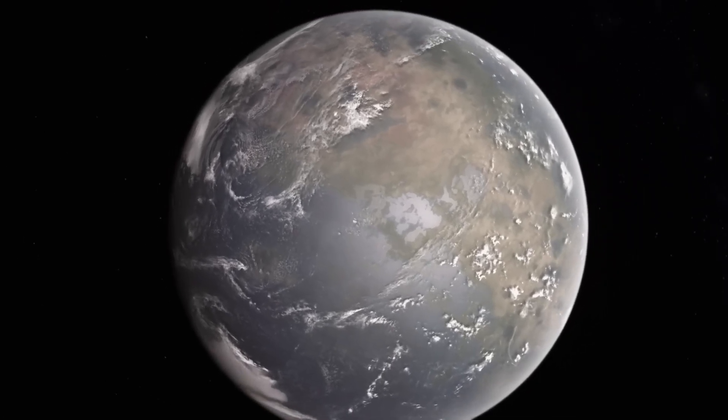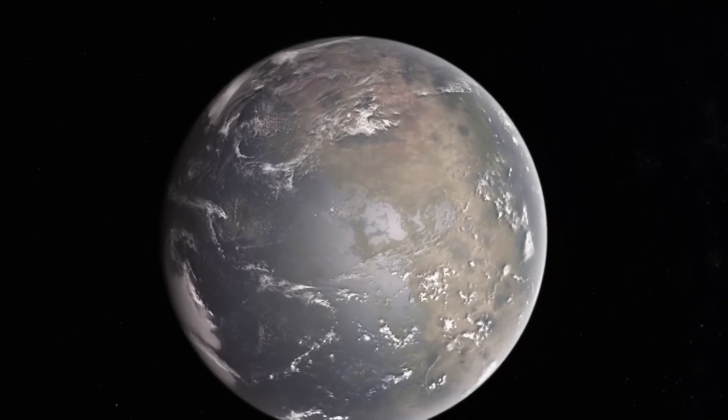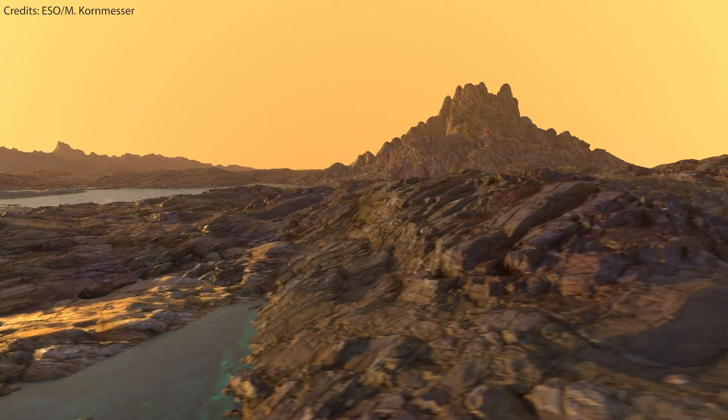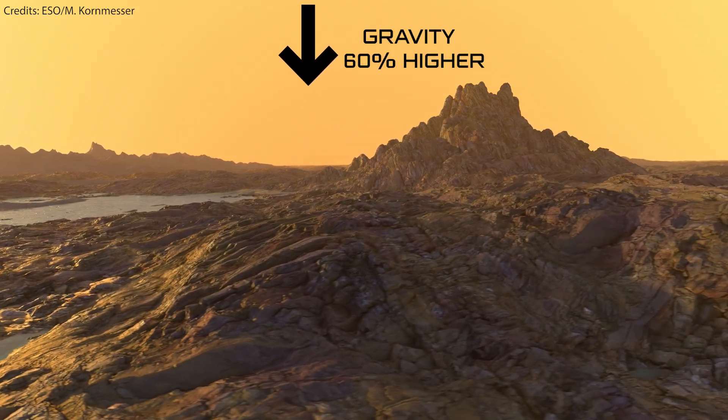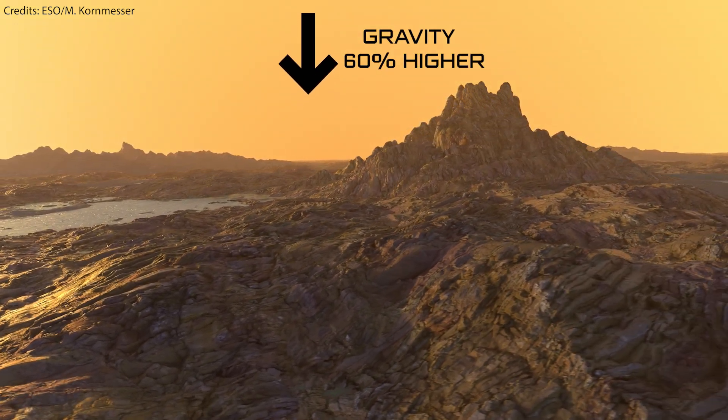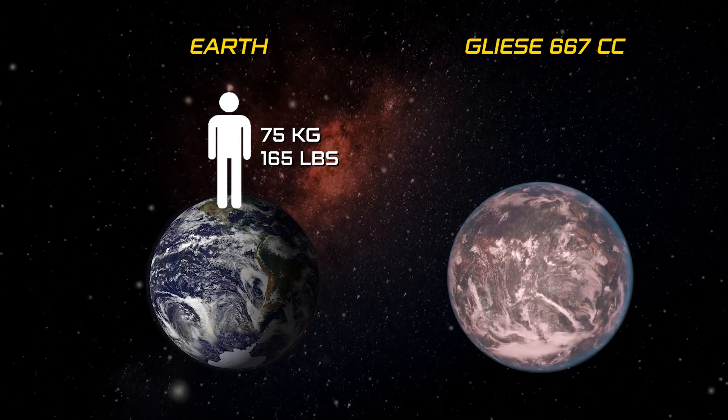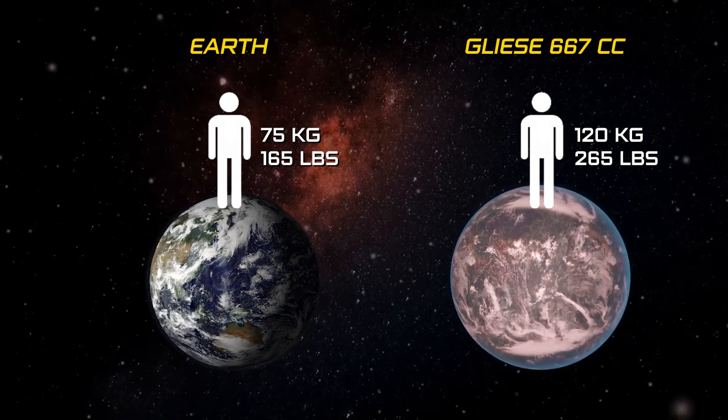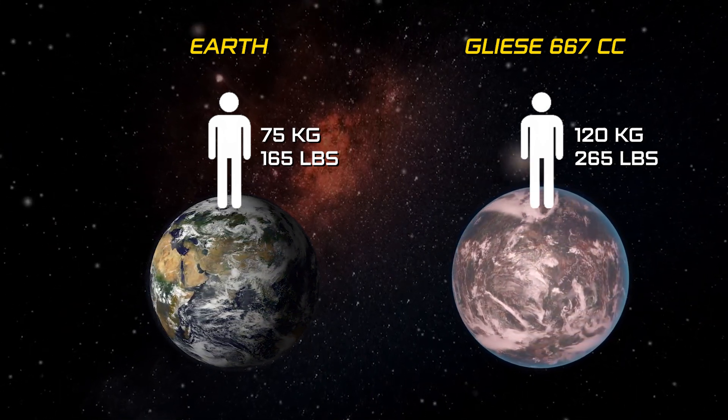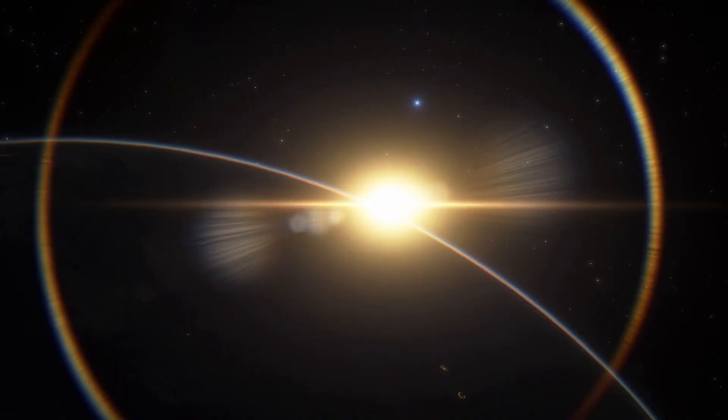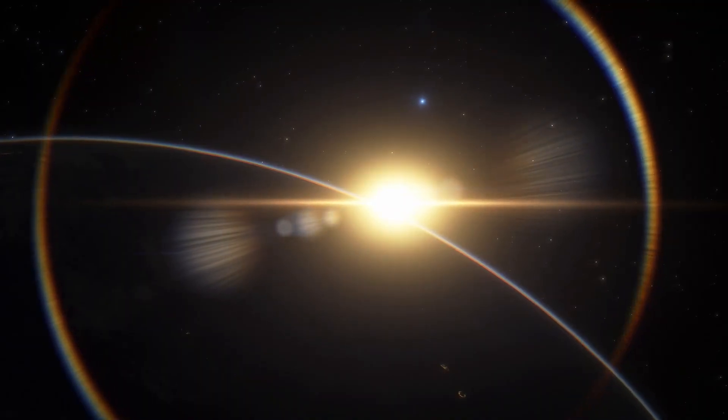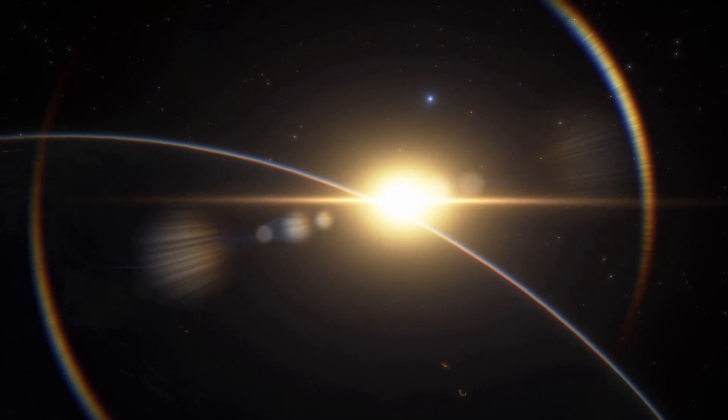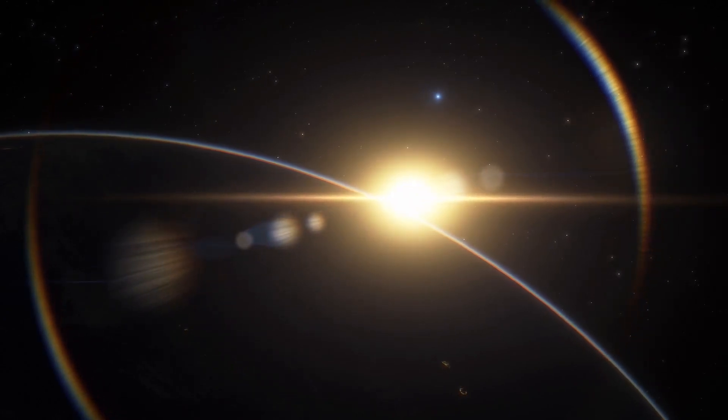But let's delve deeper into the gravitational realm. The hefty mass of Gliese 667-CC imparts a gravitational pull quite distinct from our familiar earthly confines. Picture this. On its rocky surface, gravitational acceleration could soar up to 60% higher than what we're accustomed to. A person weighing 75 kilograms or 165 pounds on Earth would find themselves hefting a load akin to 120 kilos or 265 pounds on Gliese 667-CC, a notable difference to say the least. And let's not overlook atmospheric dynamics. A planet with greater mass can cradle a more substantial atmosphere, leading to heightened atmospheric pressure at its surface.